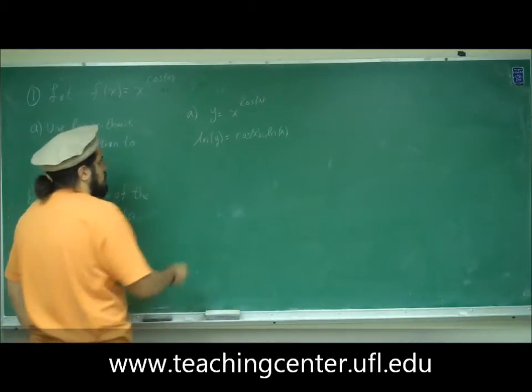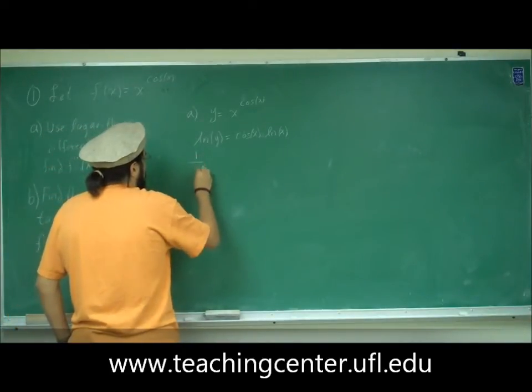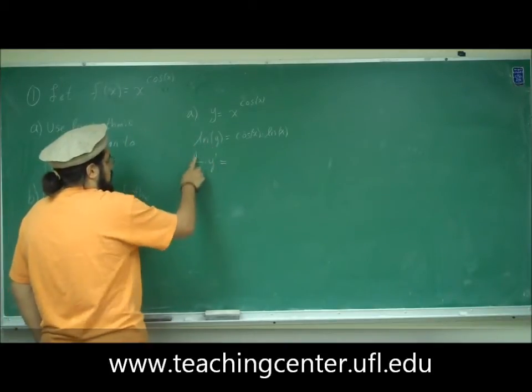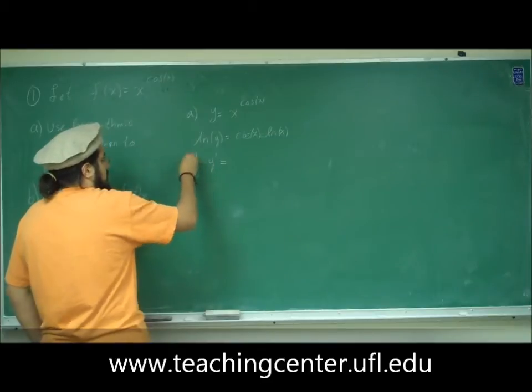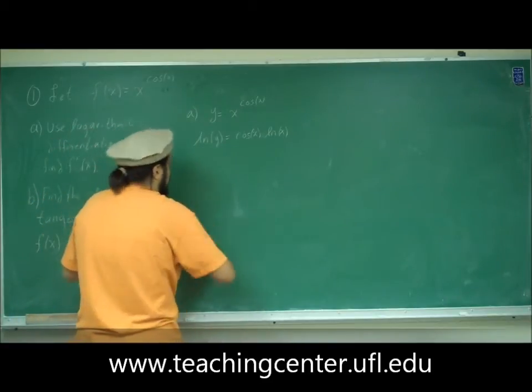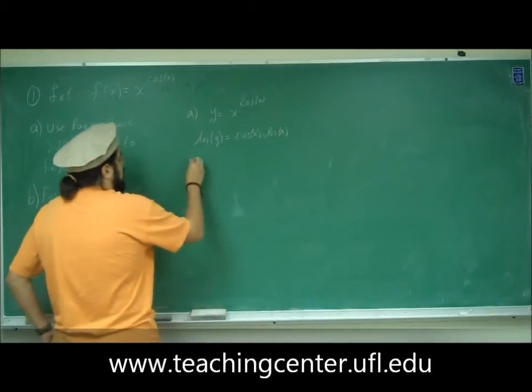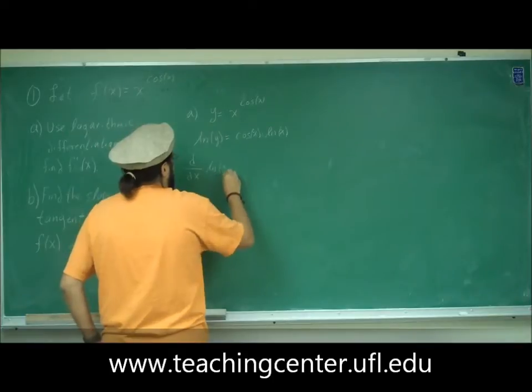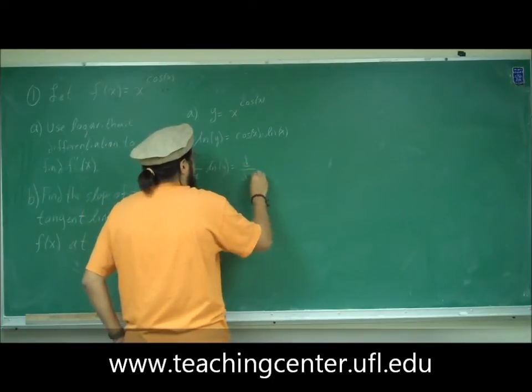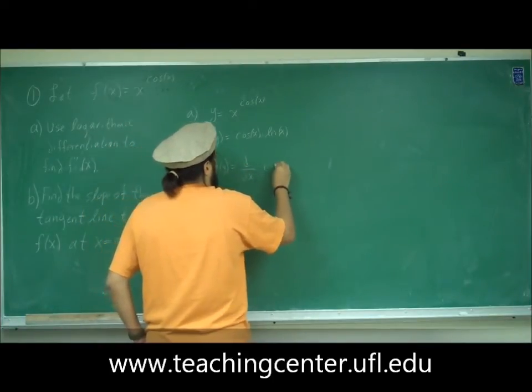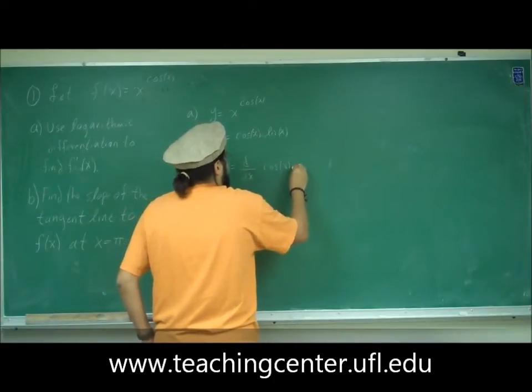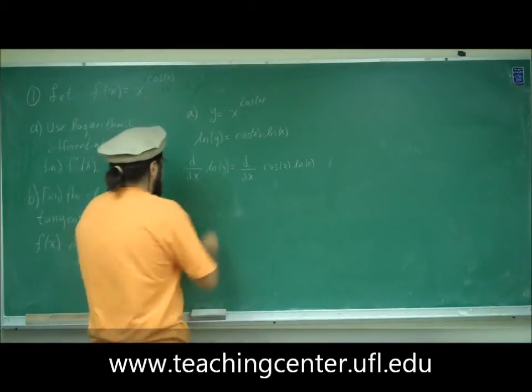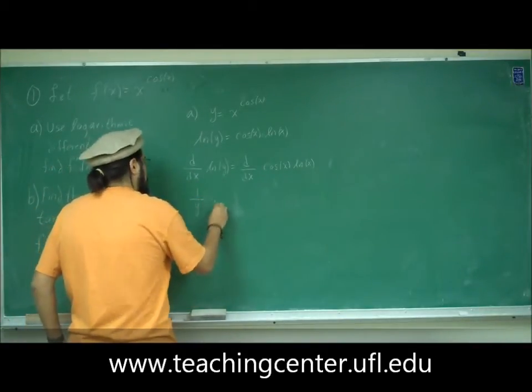Now I'm going to use implicit differentiation. So this is 1 over y times y prime. The derivative of ln of y is 1 over y times y prime. So we're doing d/dx of ln of y, and we're doing d/dx of cosine x times ln of x. So the derivative of this is 1 over y times y prime.